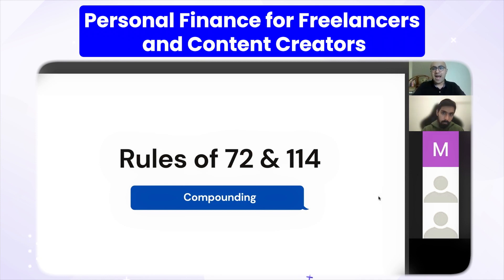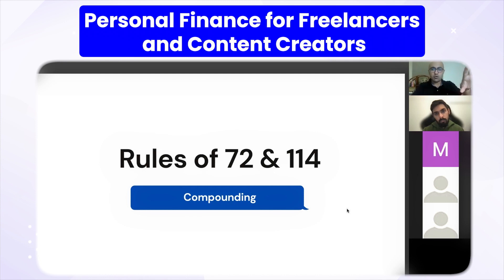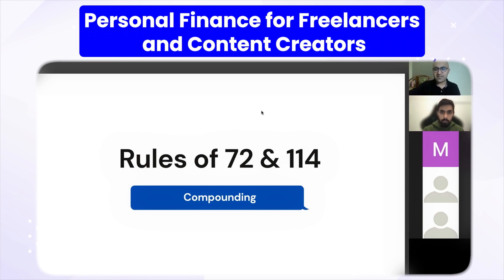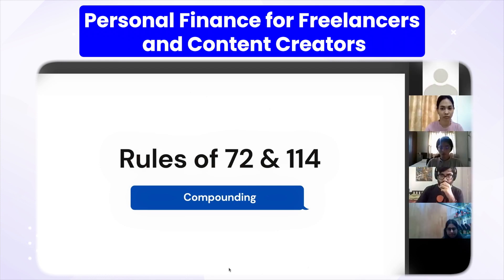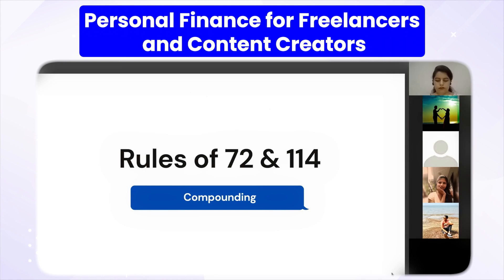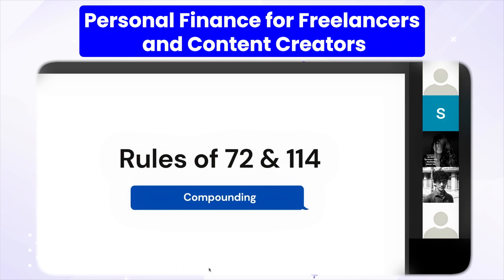The rule of 114 tells you in how much time your money will triple, given the rate of return. Your numerator is 114. If you're getting money at 10% per annum, 72 divided by 10 gives 7.2 years for doubling. Or if your goal is to double in 6 years, take 72 divided by 6 — that means you need to invest at 12% per annum to double in 6 years.